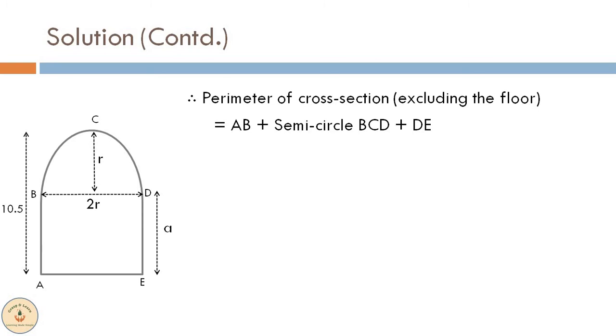Substituting the variables, we obtain a plus 2πr by 2 plus a, where a is the side of the square and 2πr by 2 is the perimeter of the semicircle.